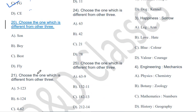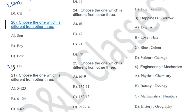Choose the one which is different from the other three: Son, Boy, Best, Fly. Here Fly will be the odd one out. Son, Boy, and Best all contain three letters with a pattern, but Fly is the one that doesn't fit — likely because Son, Boy, and Best relate to a common category while Fly does not.